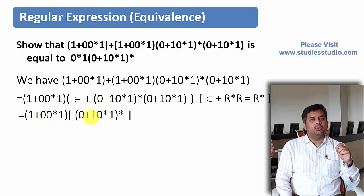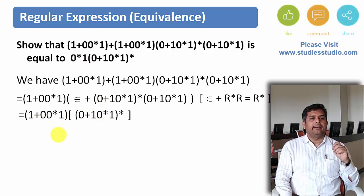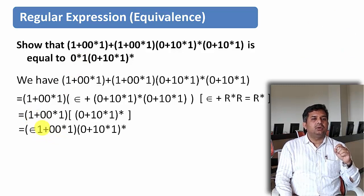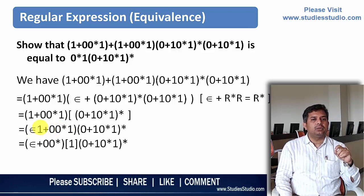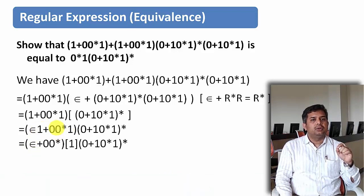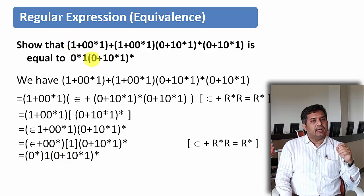We got (1 + 00*1)(0 + 10*1)*. Now from (1 + 00*1), we need to get 0*1. We add ε to the 1 — concatenating ε to 1 does not change the expression. Then we take 1 common to the right-hand side, giving us (ε + 00*)·1, which is nothing but 0*1. So this is proved.